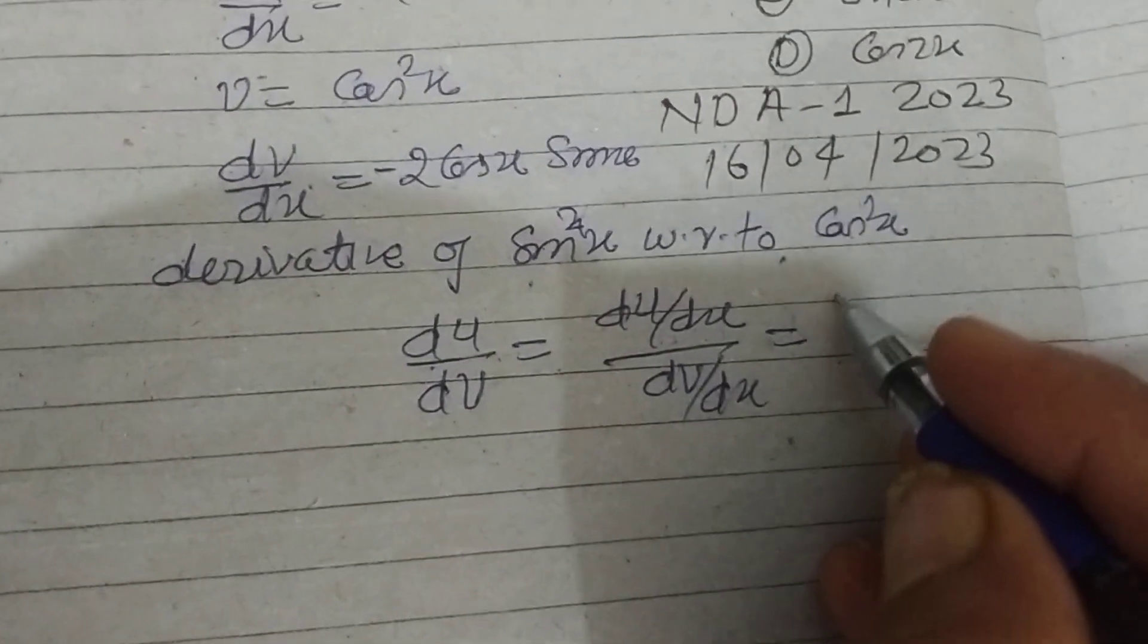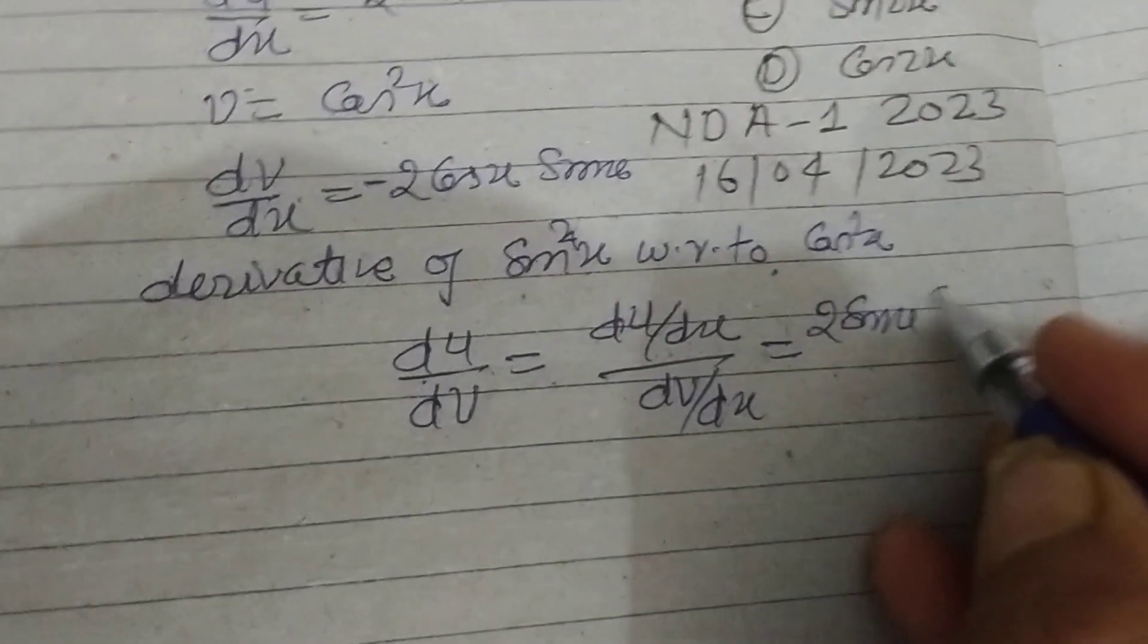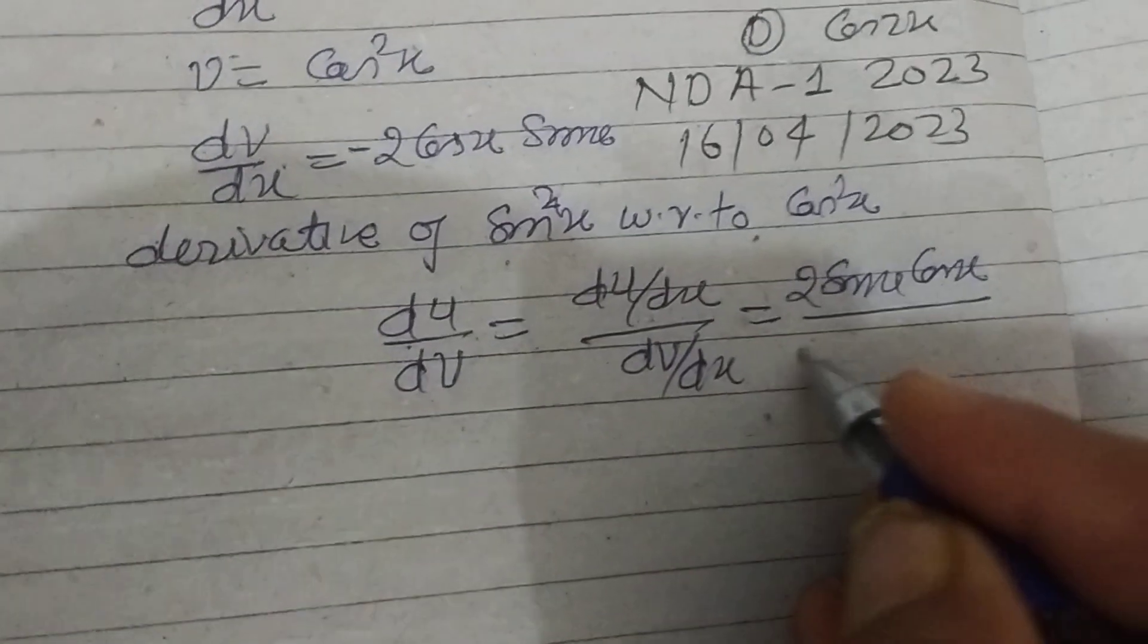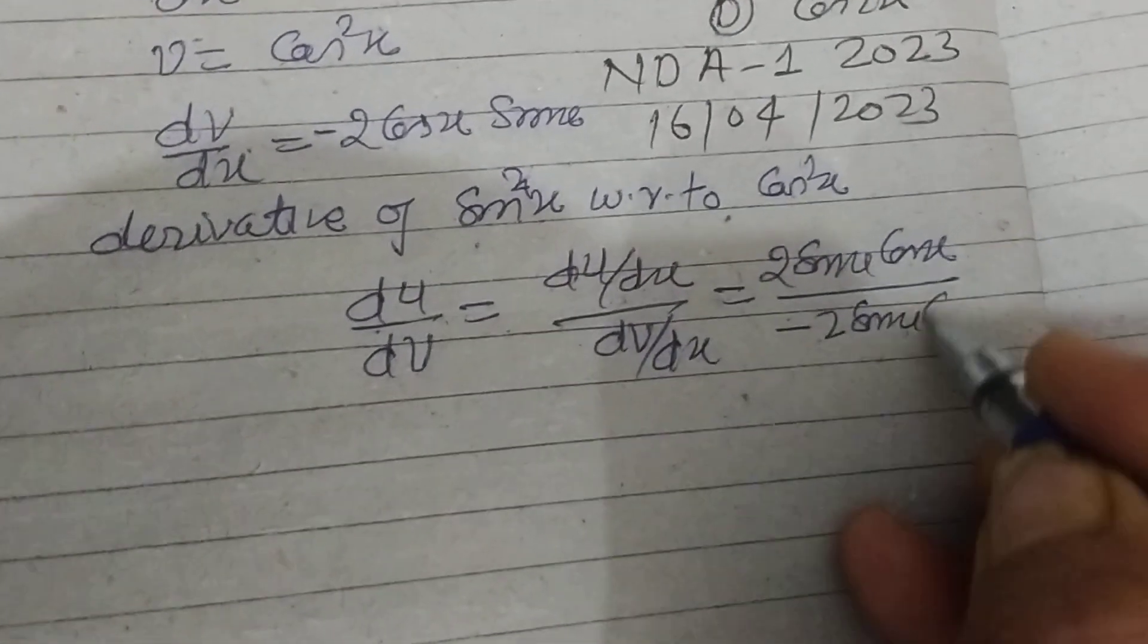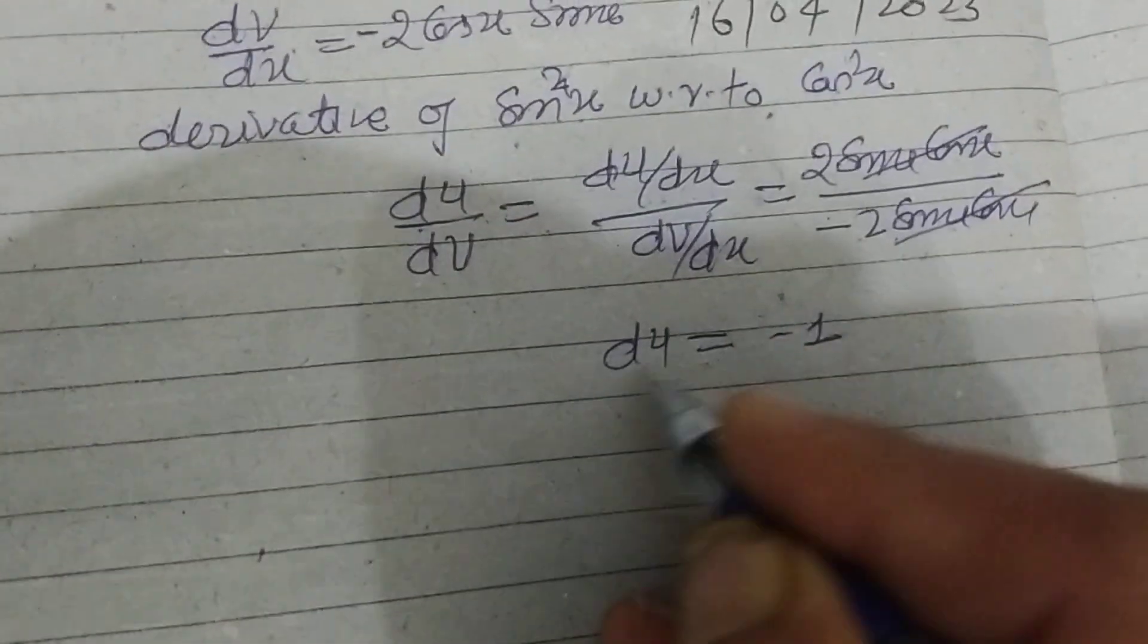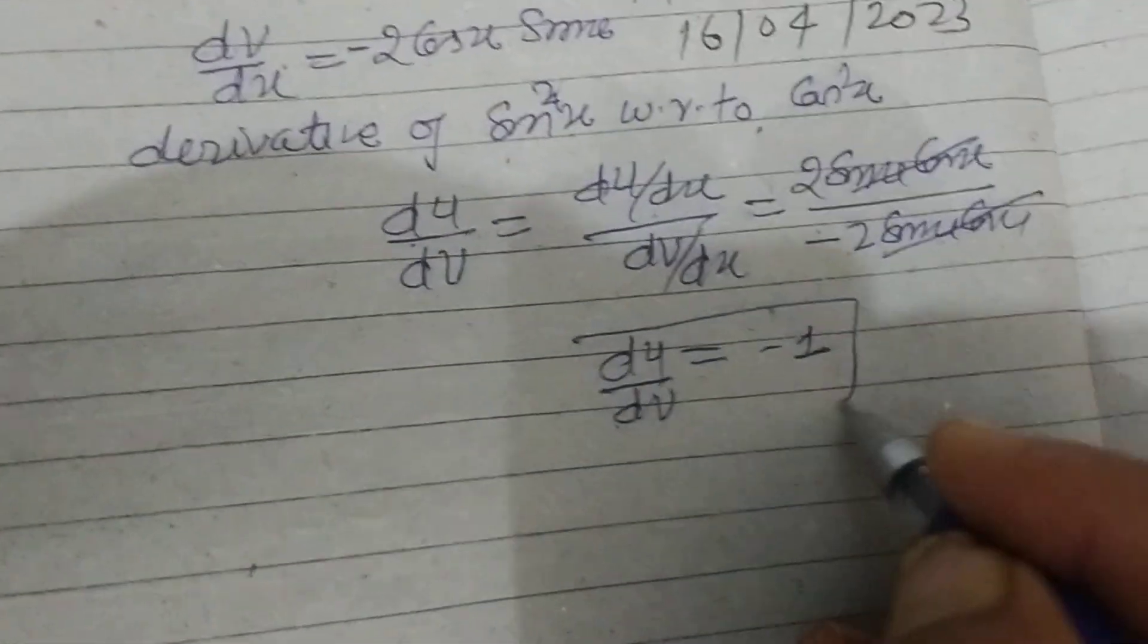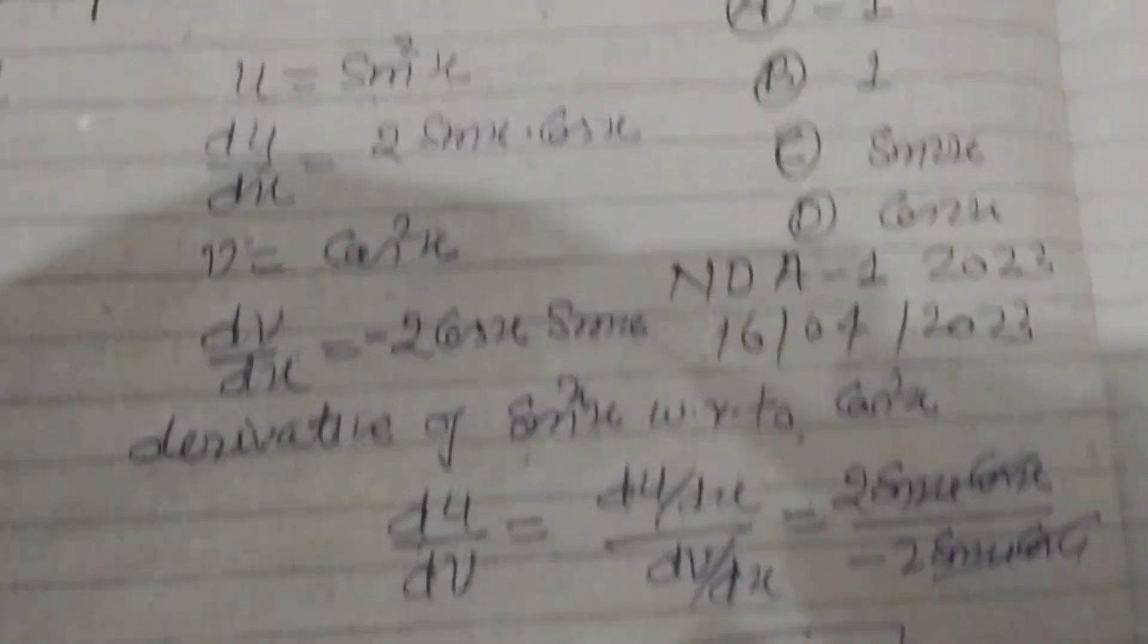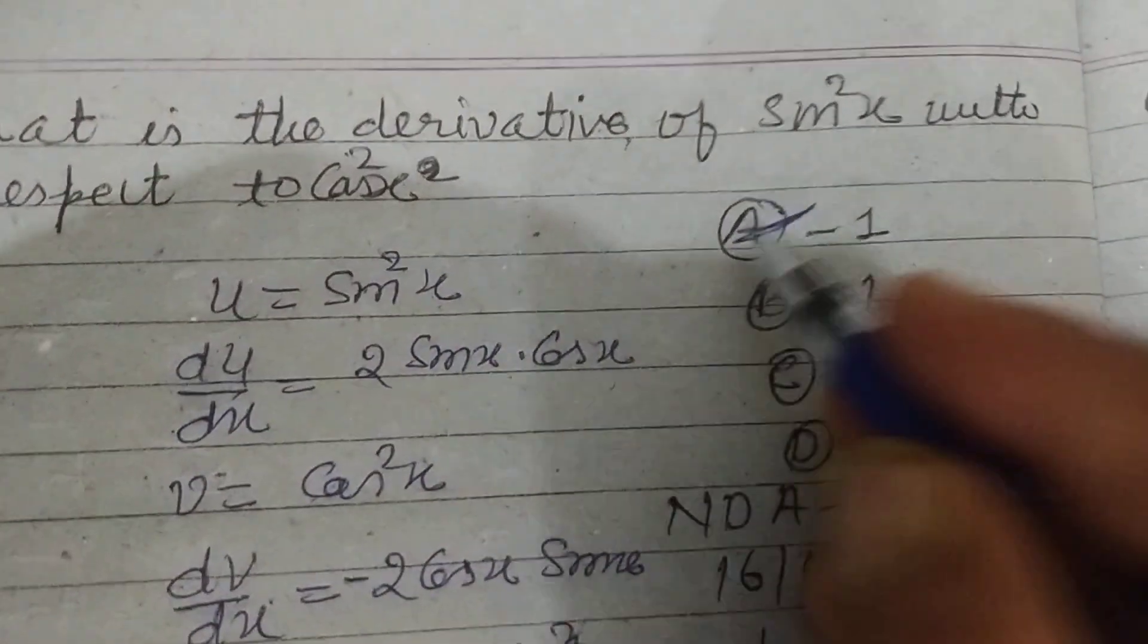So this is 2 sin x cos x upon minus 2 sin x cos x. On dividing this we got minus 1. So du upon dv equal to minus 1, which is found in option first of this question.